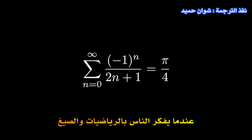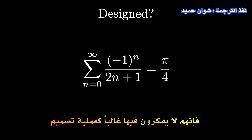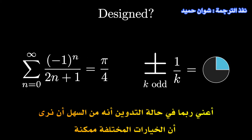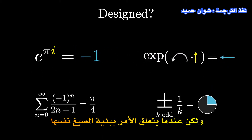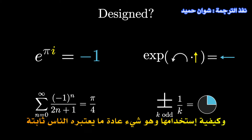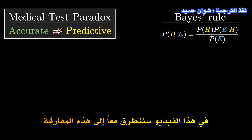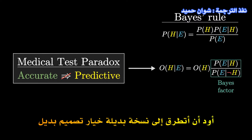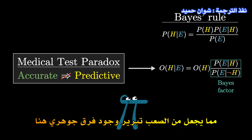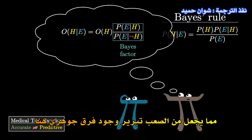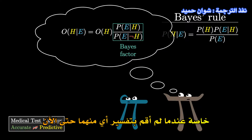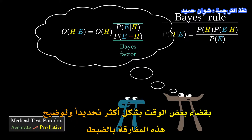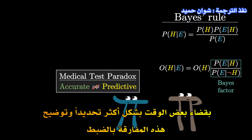When people think about math and formulas, they don't often think of it as a design process. Maybe in the case of notation it's easy to see that different choices are possible, but when it comes to the structure of the formulas themselves and how we use them, that's something people typically view as fixed. In this video, you and I will dig into this paradox, but instead of using it to talk about the usual version of Bayes' rule, I'd like to motivate an alternate version — an alternate design choice.